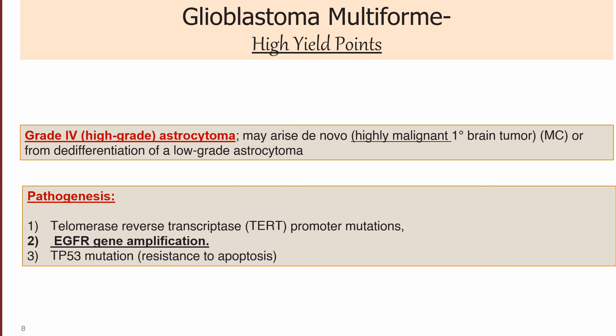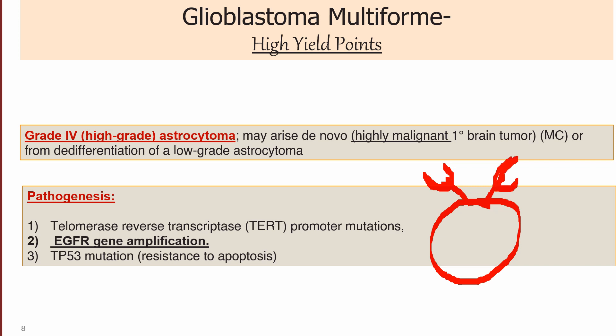Glioblastoma multiforme has a very poor prognosis with mean survival within one year. A high-yield point is the amplification of the EGFR gene — epidermal growth factor receptor. EGFR gene amplification produces more receptors, making the cell highly sensitive to epidermal growth factor, causing multiple proliferation of astrocytes. This is why it becomes a highly aggressive tumor. EGFR gene amplification is the most high-yield point in glioblastoma multiforme.